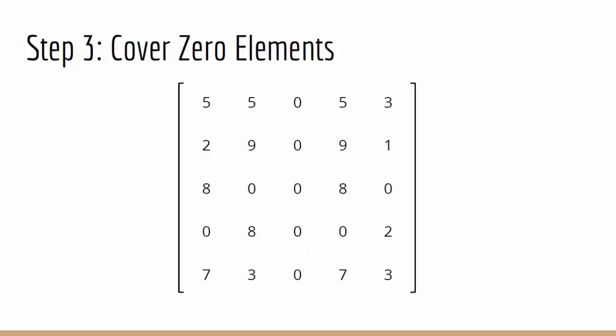Onto step 3. We now want to cover all the 0 elements with as few horizontal and vertical lines as possible. For this matrix, we are left with 3 lines covering all the 0s. A side note, you can have any arrangement of horizontal and vertical lines as you want, as long as it is the minimum amount possible, so in this case 3.